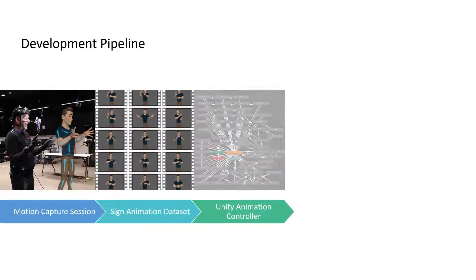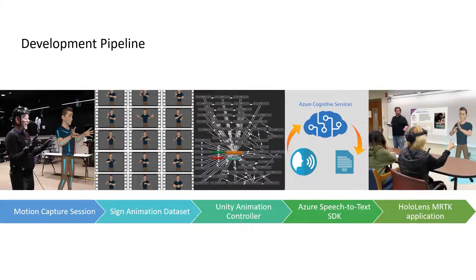The development pipeline includes five major steps. First, Motion Capture Session. Second, Create the Animation Dataset. Third, Build Unity Animation Controller. Fourth, Develop with Microsoft Azure Cognitive Services' Speech-to-Text SDK. Last, Build the System through Unity with Microsoft Mixed Reality Toolkit.